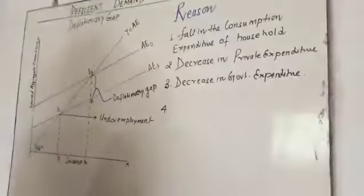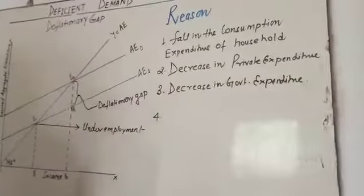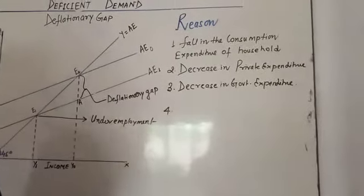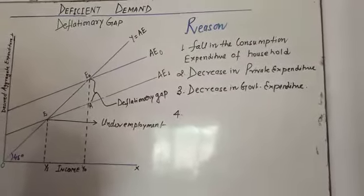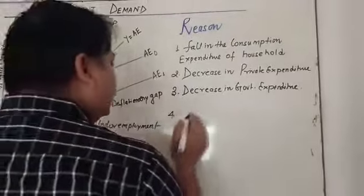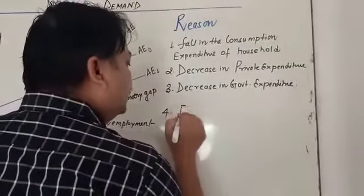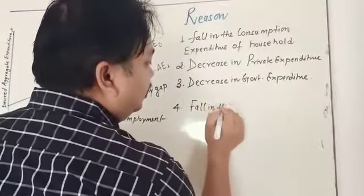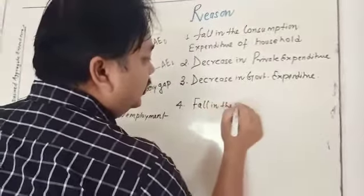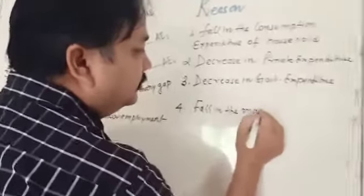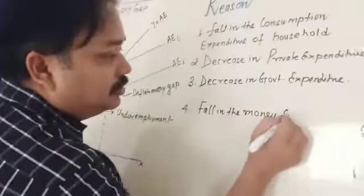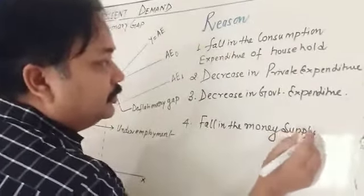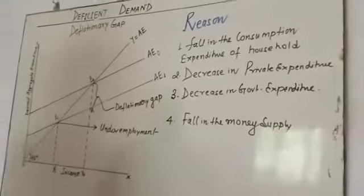Fourth, you can say monetary policy — fall in the money supply. So these are the four reasons. Now, how to correct this situation?